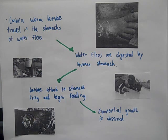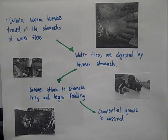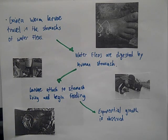The primary mode of transmission and infection is when the guinea worm is ingested by the human. The guinea worm larvae travel in the stomachs of the water fleas. As the water fleas are digested by the human stomach, the larvae attach themselves to the stomach lining and begin feeding on the nutrients present there. Then, over a long period of time, the worms begin to mature.